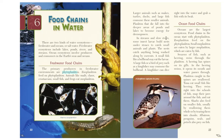In streams and slow rivers, some insect larvae build nests under stones to catch small animals and plants. The nests catch anything being washed along by currents. A small fish like a bullhead may eat the larva. A large fish or a bird of prey such as a kingfisher may consume the bullhead. A kingfisher can dive right into the water and grab a fish with its beak.